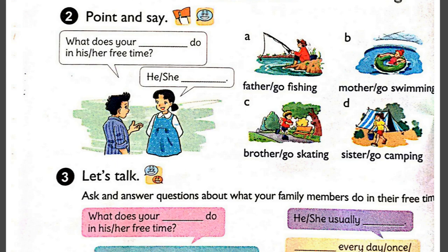Page 20. Activity 2. Point and say. What does your father do in his free time? He goes fishing. What does your mother do in her free time? She goes swimming. A. Father. Go fishing. B. Go swimming.